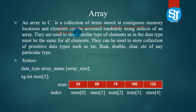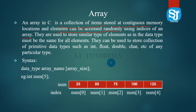The elements can be accessed randomly. Randomize means we can access the values using indices of an array. They are used to store similar types of elements.